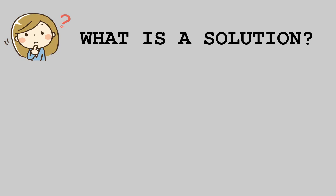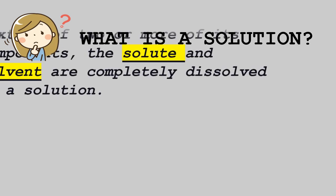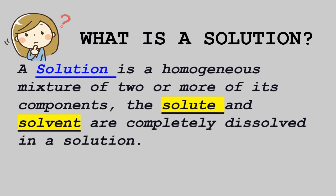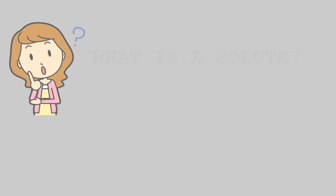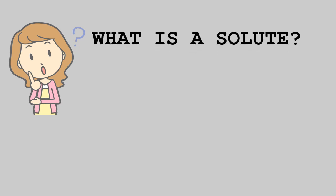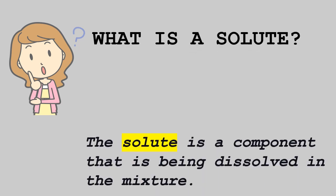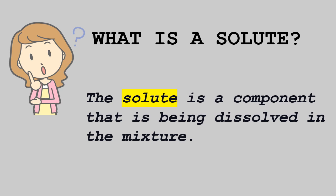First, what is a solution? A solution is a homogeneous mixture of two or more components — the solute and the solvent — that are completely dissolved. Now, what is a solute? The solute is the component that is being dissolved in the mixture.